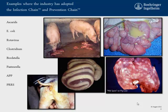What are examples where the industry has adopted the infection chain and prevention chain? There are several examples where this concept fits perfectly with what the industry has been doing for the last 20-30 years. We have been applying this thinking — but not for all diseases — for a set of diseases: Ascaris, E. coli, rotavirus, Clostridium, Bordetella, Pasteurella, APP, and PRRS.